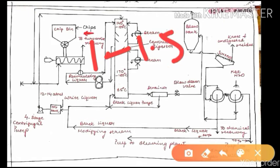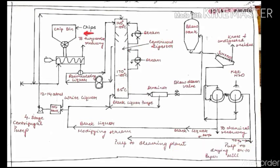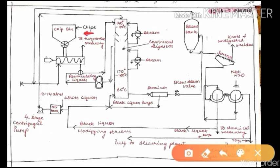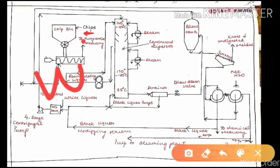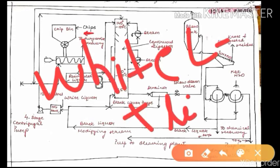After remaining in the digester for one to one and a half hours, the material is removed. The digester has different temperature ranges — in the middle it is 170 to 180 degrees Celsius and at the bottom it is 65 degrees Celsius. There are heat exchangers on the side of the digester; liquor is withdrawn as a side stream to maintain the temperature. Cold black liquor is added from below to maintain the bottom temperature at 65 degrees Celsius. Black liquor is nothing but white liquor plus dissolved lignin.